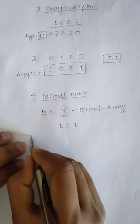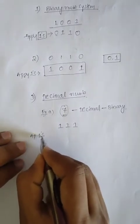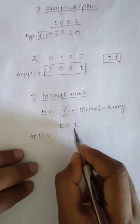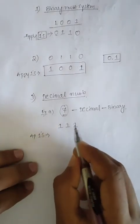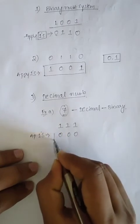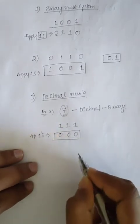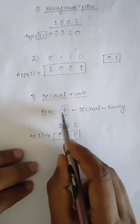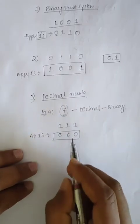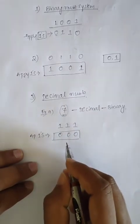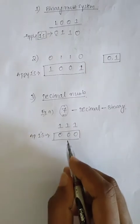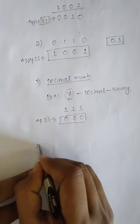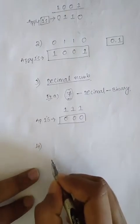Now applying ones complement to 1 1 1 — the result is 0 0 0. This is the ones complement of the decimal number positive seven. Now, what about a negative sign? What about negative seven?